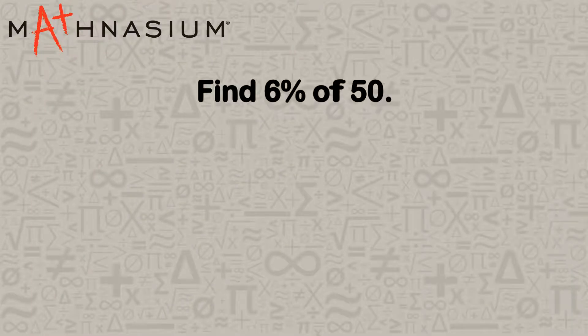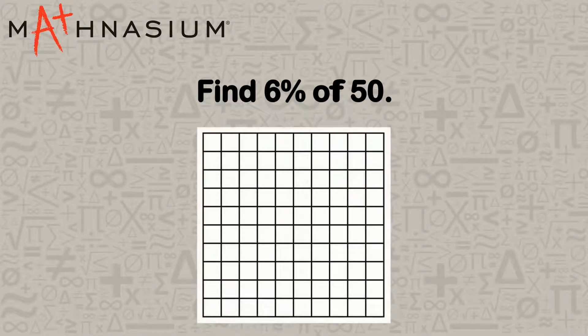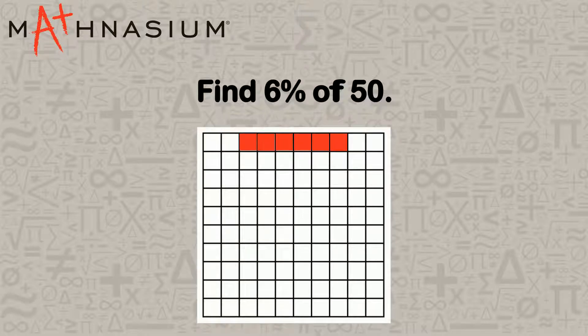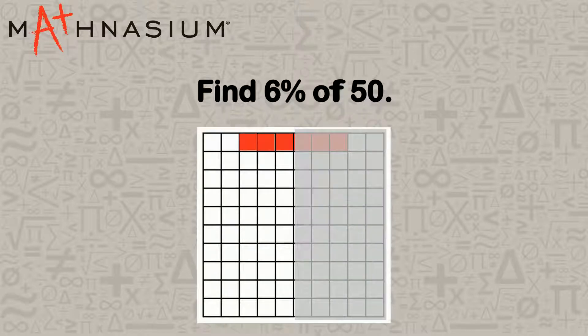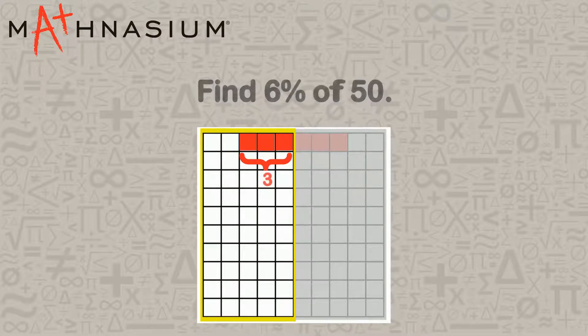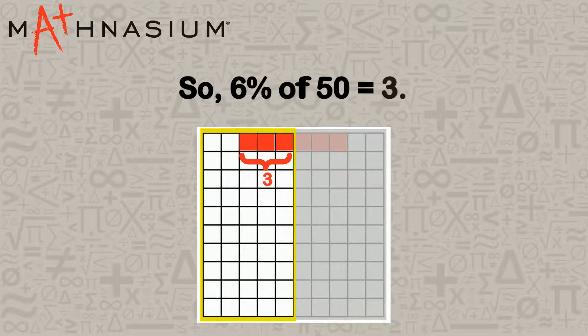We'd usually take 6 for each 100, but in this problem we only have 50, which is half of 100. Since we have half of 100, we'll take half of 6, which is 3. So 6% of 50 equals 3.